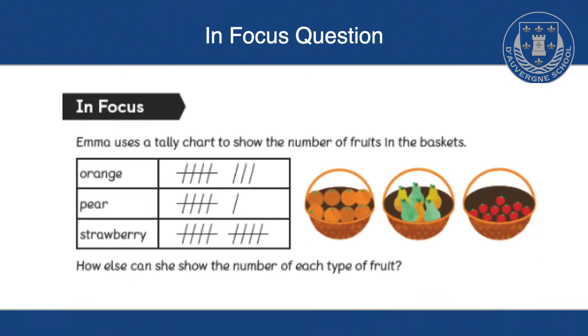Looking at the in focus question: Emma uses a tally chart to show the number of fruits in the basket. How else can she show the number of each type of fruit?